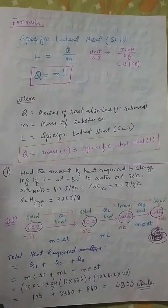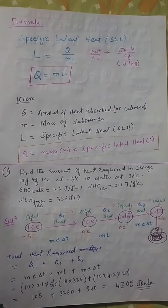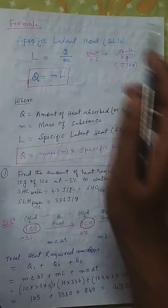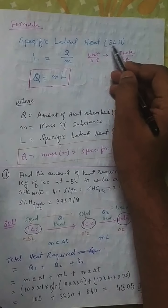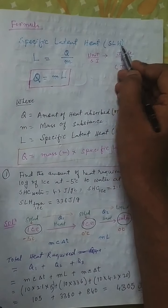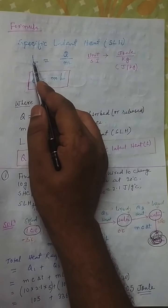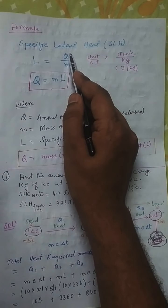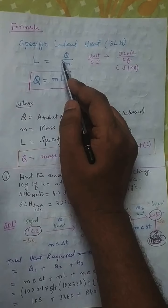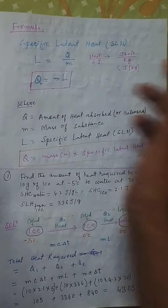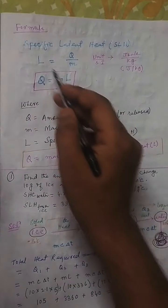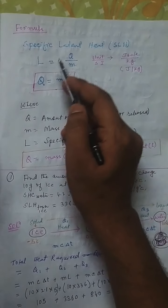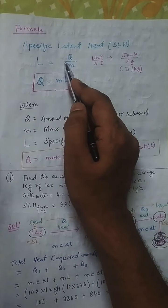In this video, I am going to discuss the formula of specific latent heat — we will call it SLH. Specific latent heat is denoted by L. Q is the amount of heat released or absorbed, and M is the mass of the object. So L equals Q divided by M. Specific latent heat is equal to the amount of heat divided by the mass of the object.